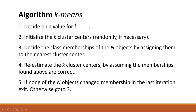How does this algorithm run? First, decide on the value of K — we have to specify the value of K. Then initialize the K cluster centers randomly. Decide the class membership of the N objects by assigning them to the nearest cluster center. Re-estimate the K cluster centers by assuming the membership found above is correct. If none of the N objects change membership in the last iteration, the iteration will stop; otherwise go to step 3.